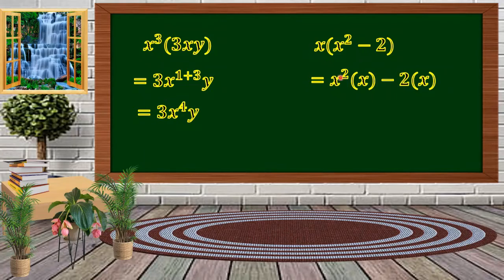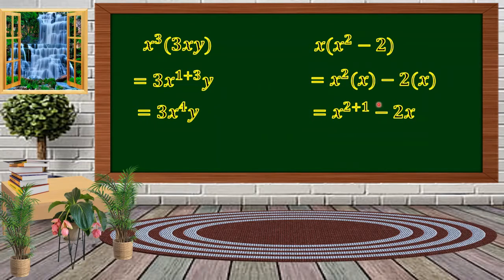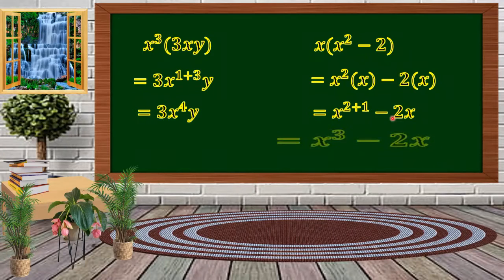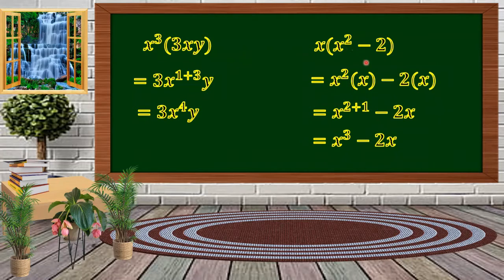So we have x squared multiplied by x, minus 2 multiplied by x. We're going to add the exponents since we have the same base, giving us 2 plus 1 for x, minus 2 times x which is 2x. Simplifying further, 2 plus 1 is 3, so we get x raised to 3 minus 2x. That is the product of x times the quantity x squared minus 2.